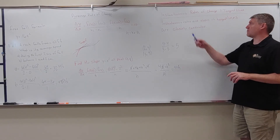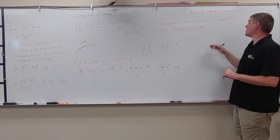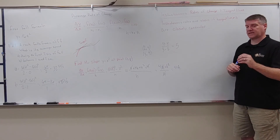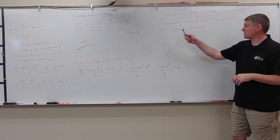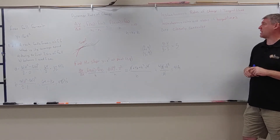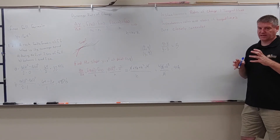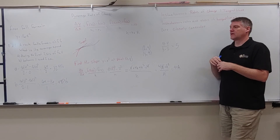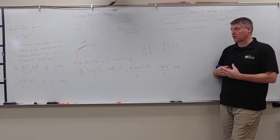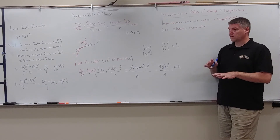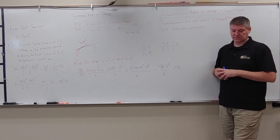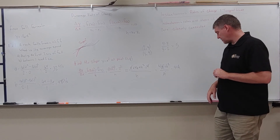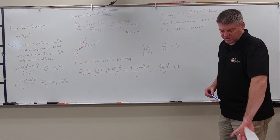The last thing we're going to talk about is instantaneous rates of change and tangent lines. The instantaneous rate is if we could take a rate at one instant — that's called the instantaneous rate — and the slope of the tangent lines are closely connected. We're going to look more at the slope at a specific point on a curve, which is the slope of the tangent line. This is just a review of rates of change and tangents to curves.